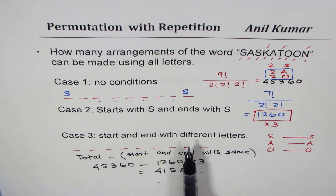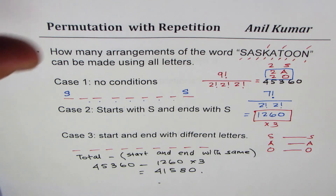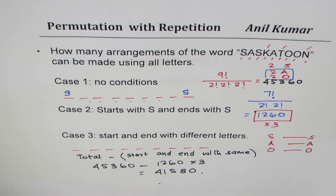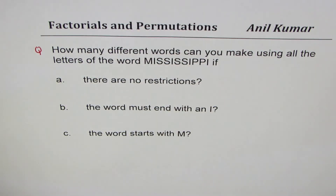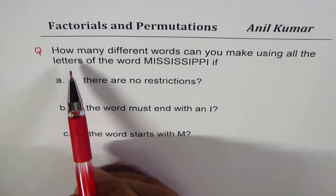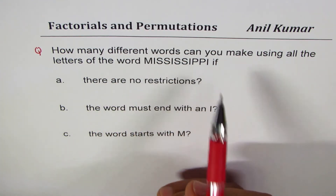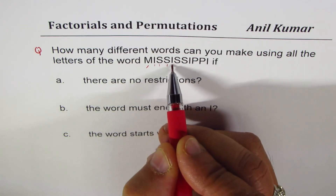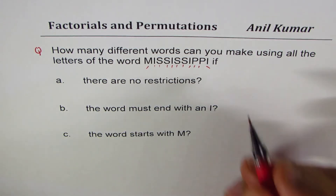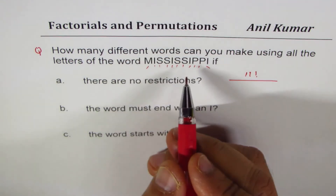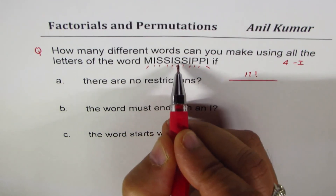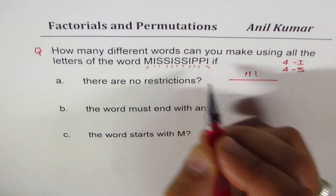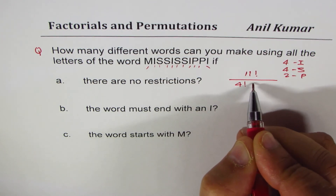Now here is the last question for you to practice. How many different words can you make using all the letters of the word MISSISSIPPI? Counting: M, I, S, S, I, S, S, I, P, P, I — 11 letters total. Case 1: no restriction. The answer is 11 factorial divided by 4 factorial for the four I's, 4 factorial for the four S's, and 2 factorial for the two P's.